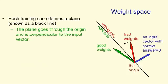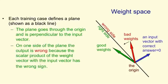So as before, the plane goes through the origin, it's perpendicular to the input vector, and on one side of the plane, all the weight vectors are bad, and on the other side, they're all good.